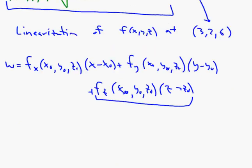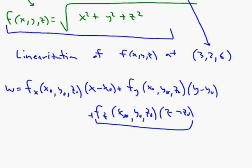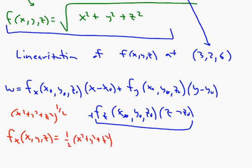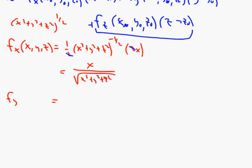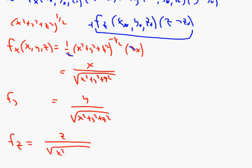We need some partial derivatives. There's nice symmetry here. Writing the function as x squared plus y squared plus z squared to the one-half power, the partial with respect to x is one-half times that expression to the negative one-half times 2x — by the chain rule. The 2s cancel, giving x over the square root of x squared plus y squared plus z squared. By symmetry, f sub y is y over that same square root, and f sub z is z over it.